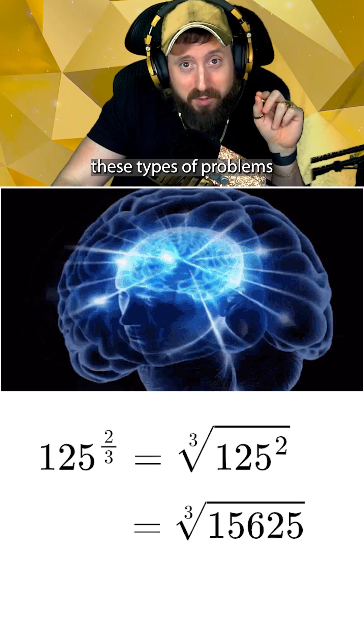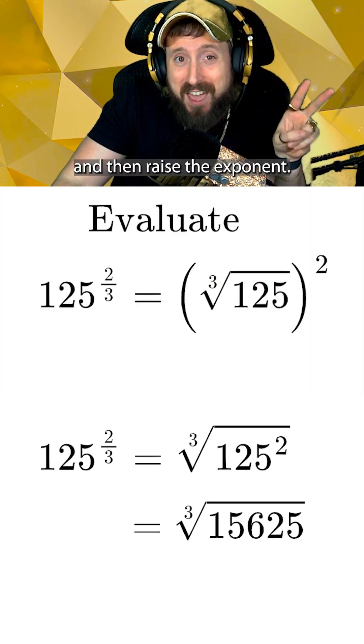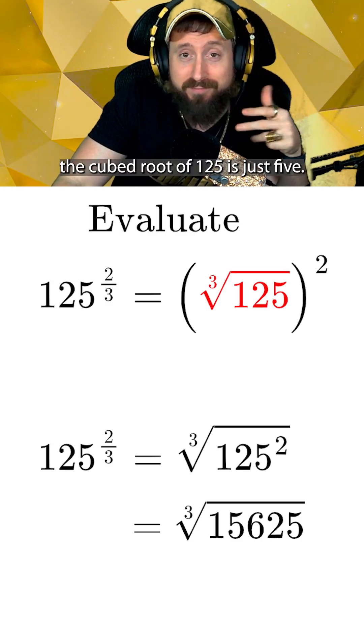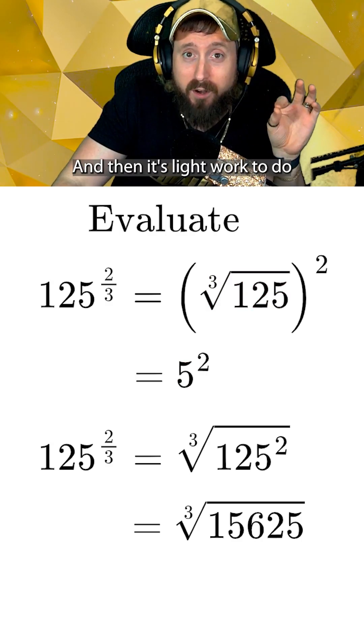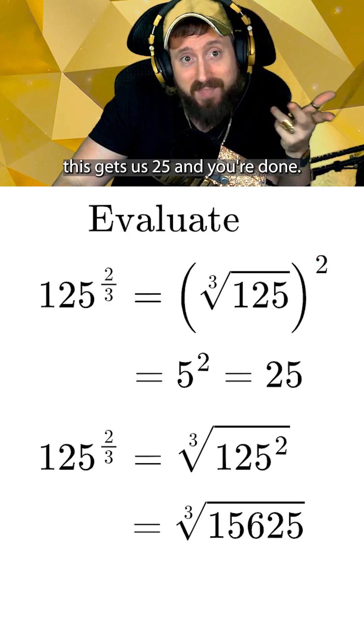The 200 IQ play to do these types of problems is to switch the order and do the root first and then raise the exponent. In this case, we should know the cube root of 125 is just 5, and then it's light work to do the exponent part of 5 to the second power. This gets us 25, and you're done.